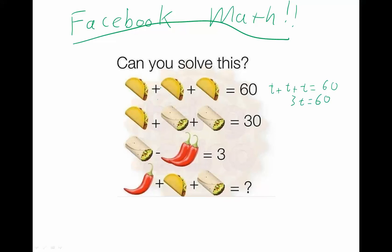And then notice, all of these tacos are the same, right? They've all got a little bit of beef and a little bit of lettuce, it looks like, and I think that's a tomato right there and maybe some cheese. They are identical tacos. So we definitely can call them all the same t's. Solving that, we can see that the taco must equal 20.